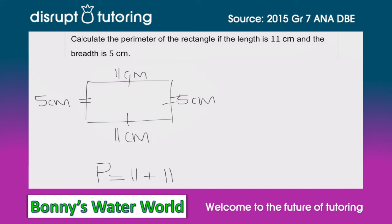Let's work that out together: 11 plus 11 is 22, plus 5 is 27, plus 5 is 32. Now, why would you not get your full mark there? It's because the examiner wants to see that we know we're using a distance measurement, which we show by writing centimeters.